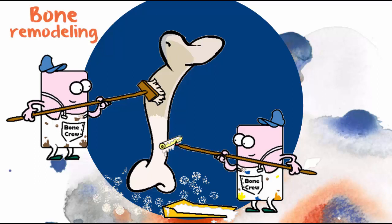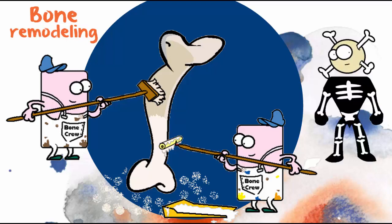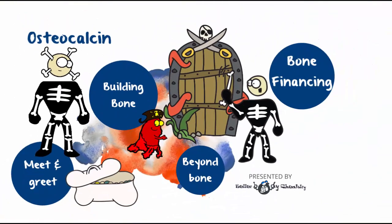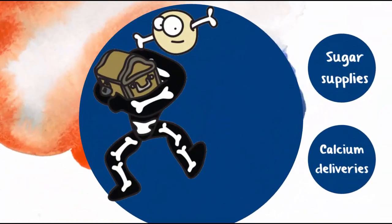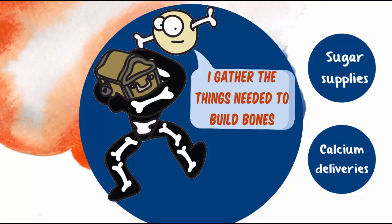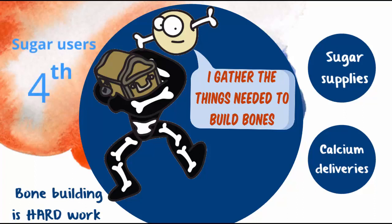Bone remodeling is very much a team effort. Osteoblast and osteoclast activity should be perfectly in sync, which is where osteocalcin comes in — it helps to sync osteoclast and osteoblast activity. But osteocalcin is a wanderer; it leaves the bone and enters the circulation. Its chief job there is to mobilize resources to build new bone. And bone building requires lots of energy. In fact, bone is classified as the 4th biggest sugar user in the body.